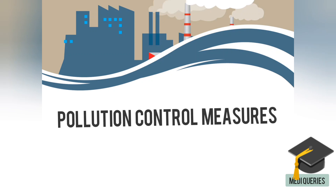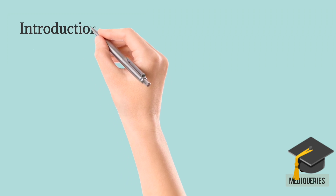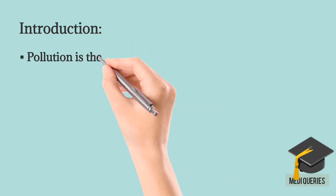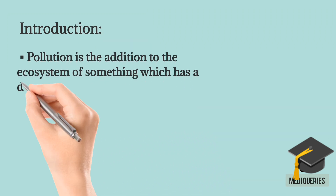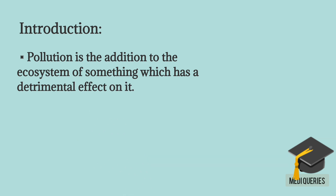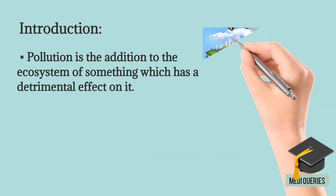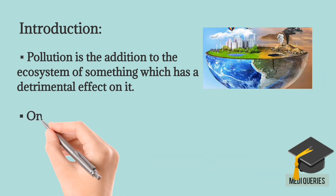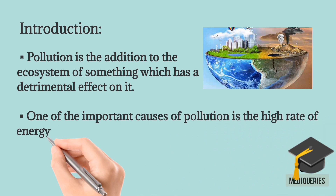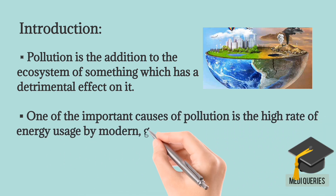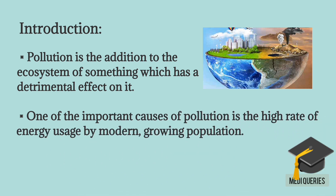Pollution Control Measures. Pollution is the addition to the ecosystem of something which has a detrimental effect on it. One of the most important causes of pollution is the high rate of energy use by modern growing population.